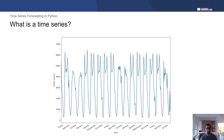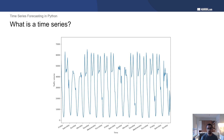Here we have another time series example, which is traffic volume — the number of cars passing through an interstate road. In this case, it is recorded every hour. During the day, you're going to have some peaks — maybe right before work and right after work. And then at night, traffic is really low; pretty much nobody is using the roads anymore.